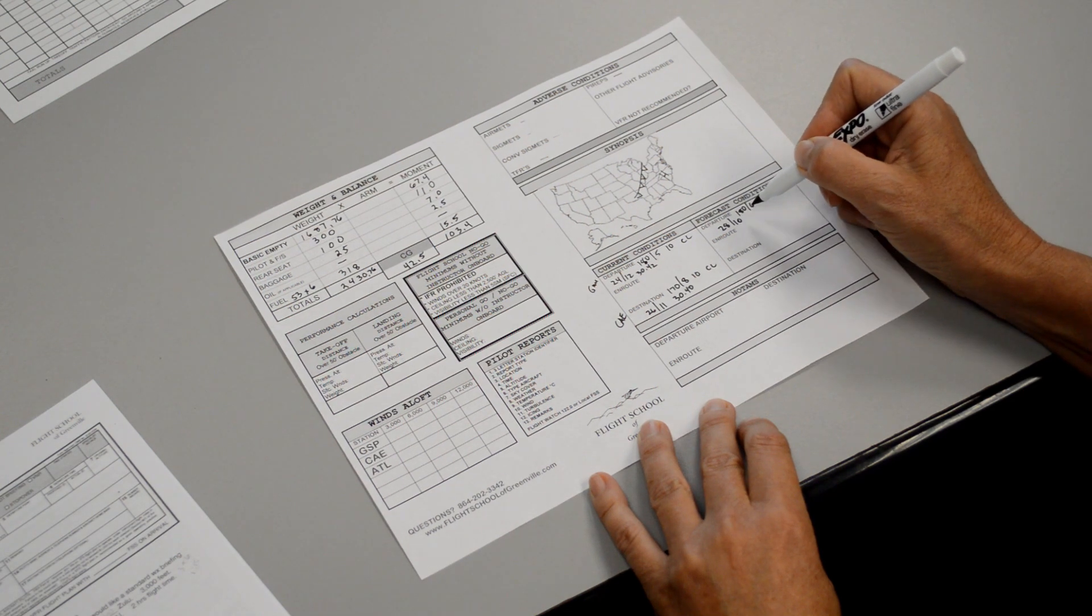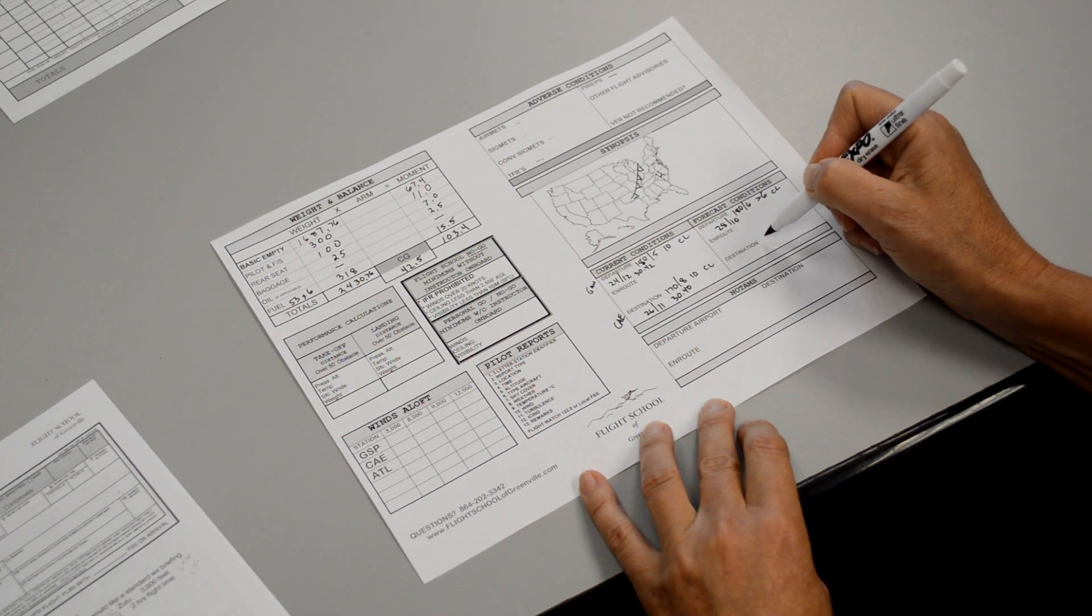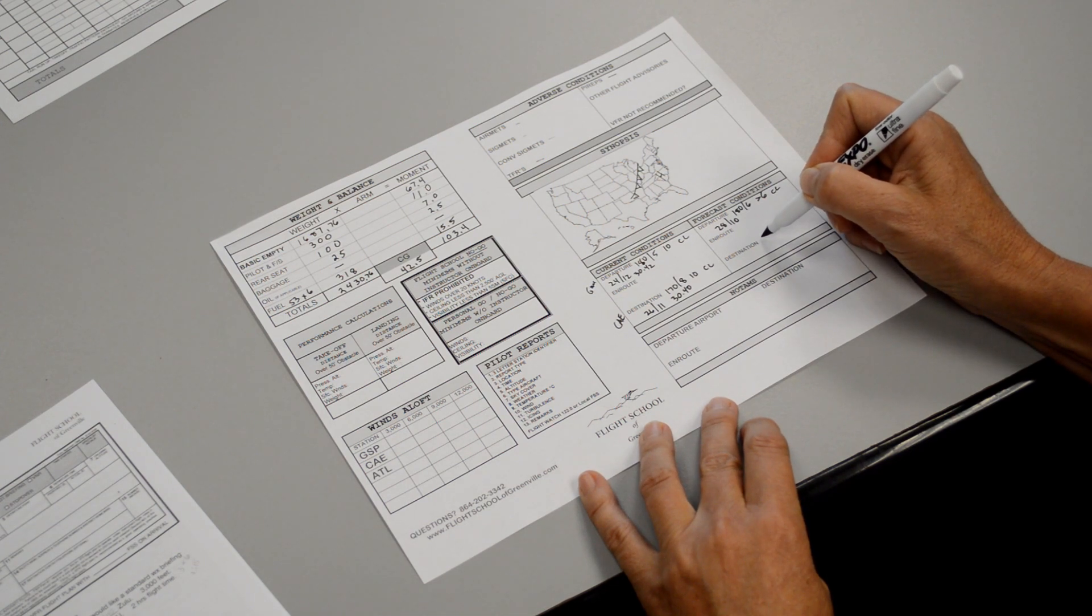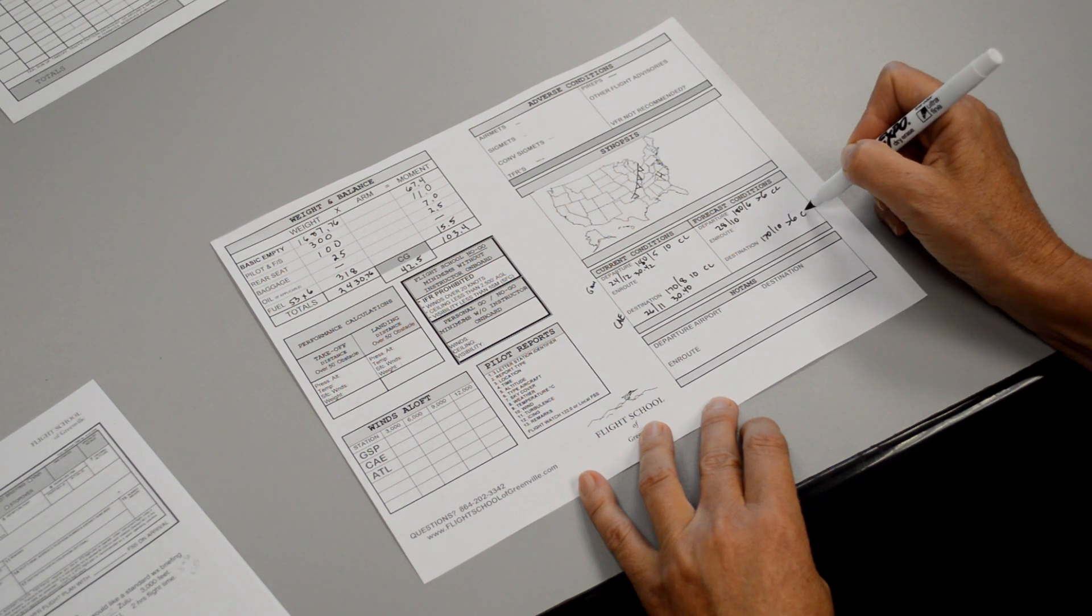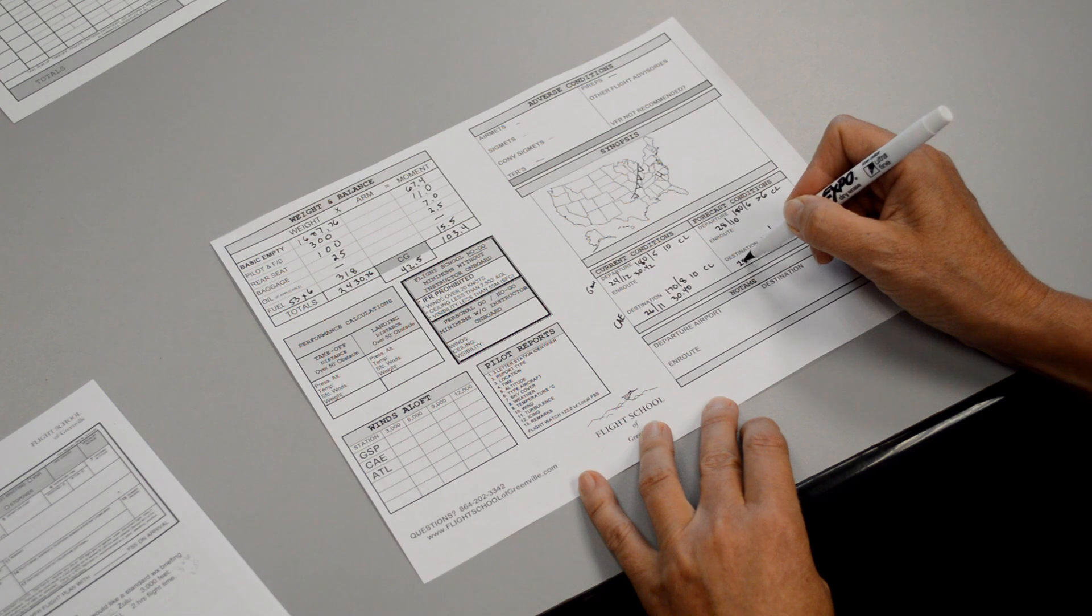For your winds aloft at Charlie Alpha Echo, the forecast around your arrival. The wind 170 at 10. The visibility greater than 6. The sky is clear. Temperature 28, dew point 10.